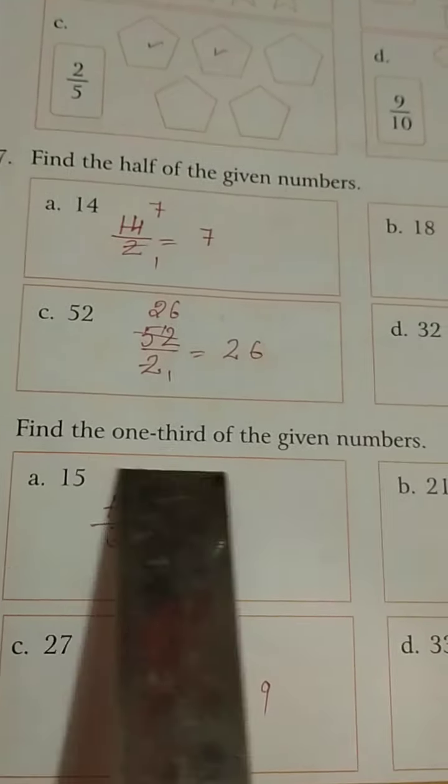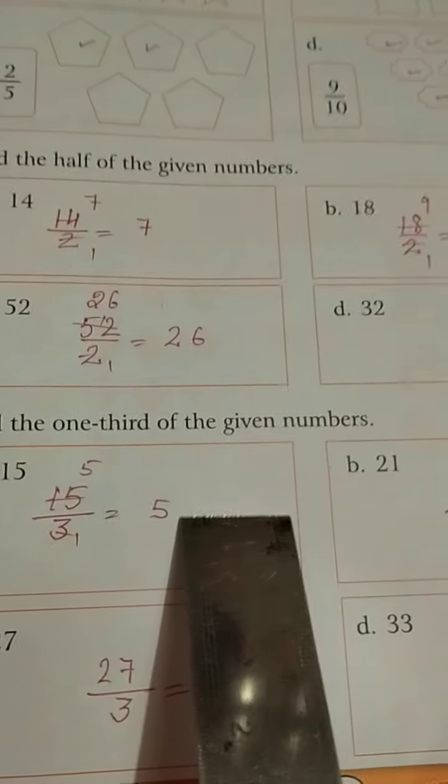Now 15, find the 1 3rd of 15. 1 3rd of 15 means 15 divided by 3. 3 5s are 15, then we are getting this 5.